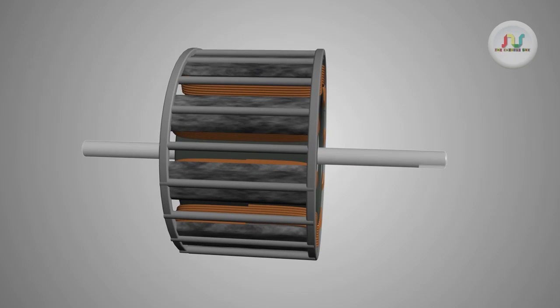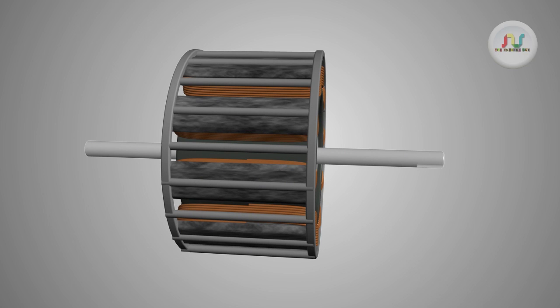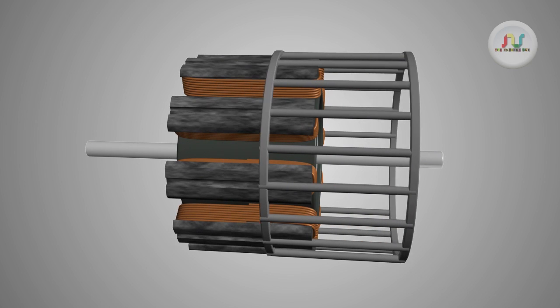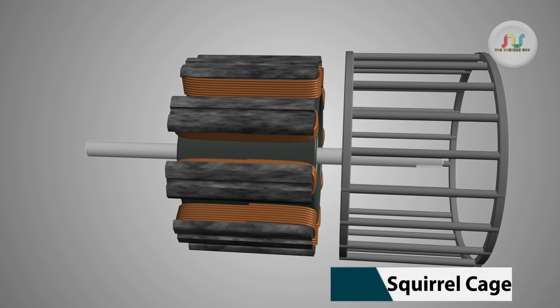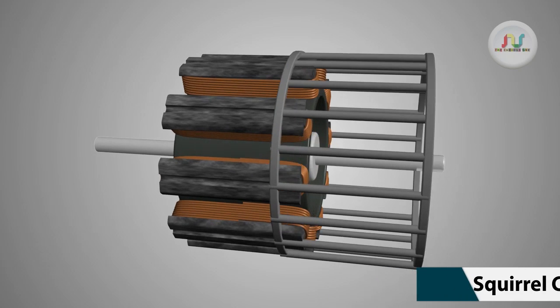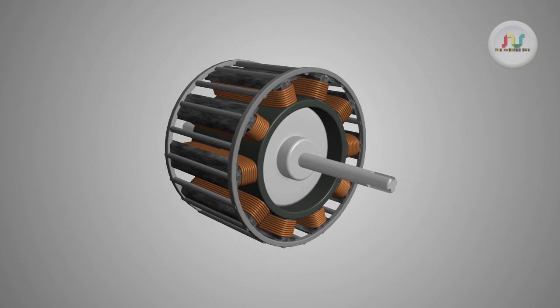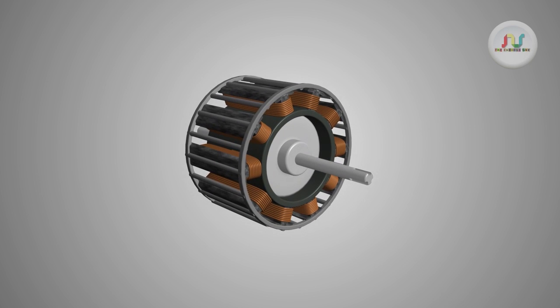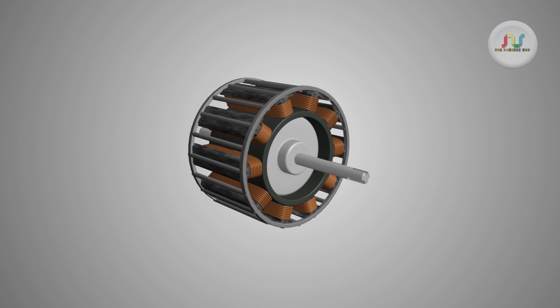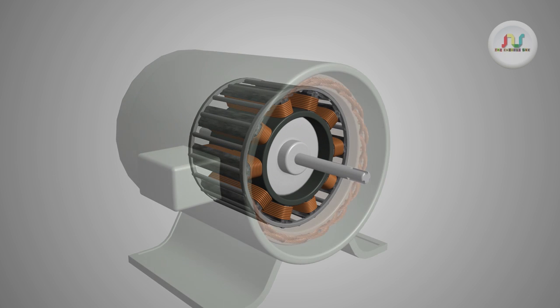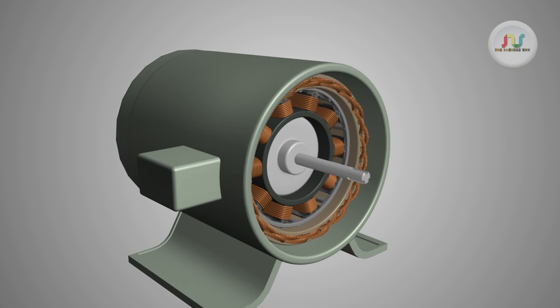To make synchronized motor self-starting, a squirrel cage arrangement is cleverly fitted through the pole tip. At starting, rotor field coils are not energized, so revolving magnetic field induces electricity in squirrel cage bars, and the rotor starts rotating just like an induction motor.